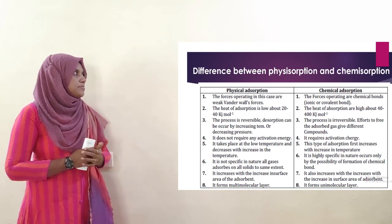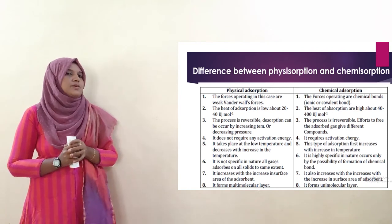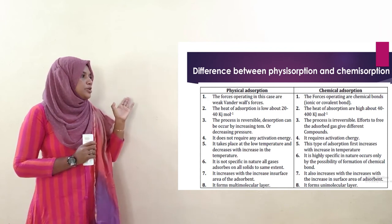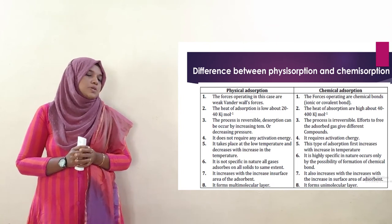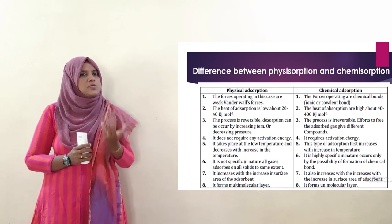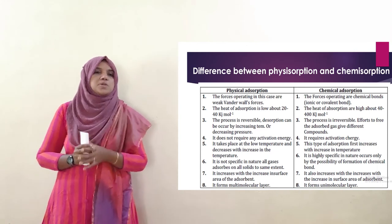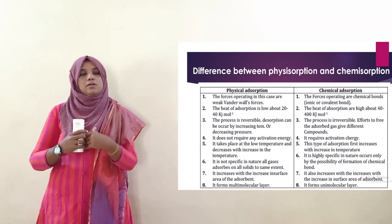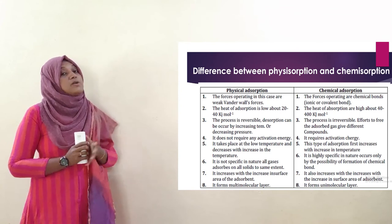Second point: the heat of adsorption is low in physisorption — about 20 to 40 kilojoules per mole — because the forces are weak. In chemisorption, the heat of adsorption is high — about 40 to 400 kilojoules per mole — because the chemical bond is strong.